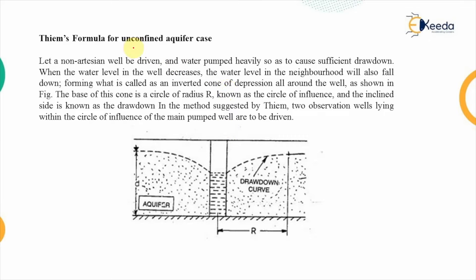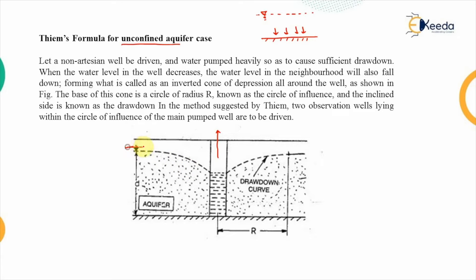When we talk about the unconfined aquifer, on one side there will be a hard strata which does not allow passing of water, but from the top surface it will be open so that we can extract the water out of it. A well has been inserted and it will be pumping out the water. Before pumping, there was a static water table — the level of the water table in this aquifer.